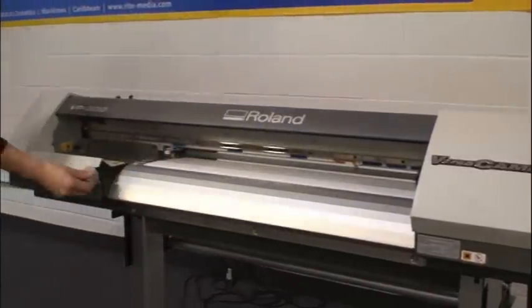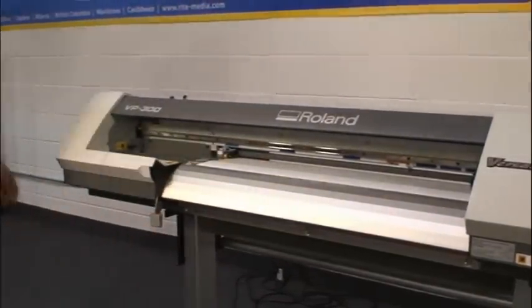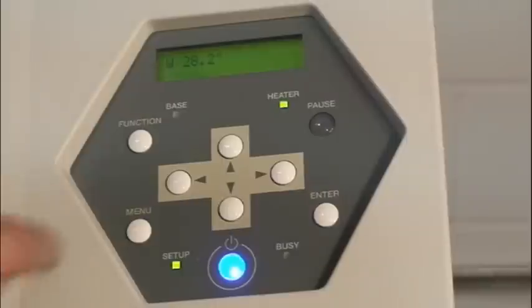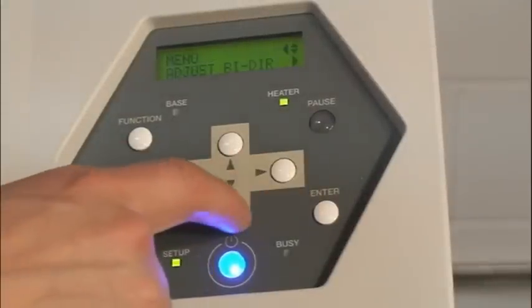First, make sure a piece of media is loaded in the machine. Press the menu button followed by the down key until adjust bidirectional is on the screen.